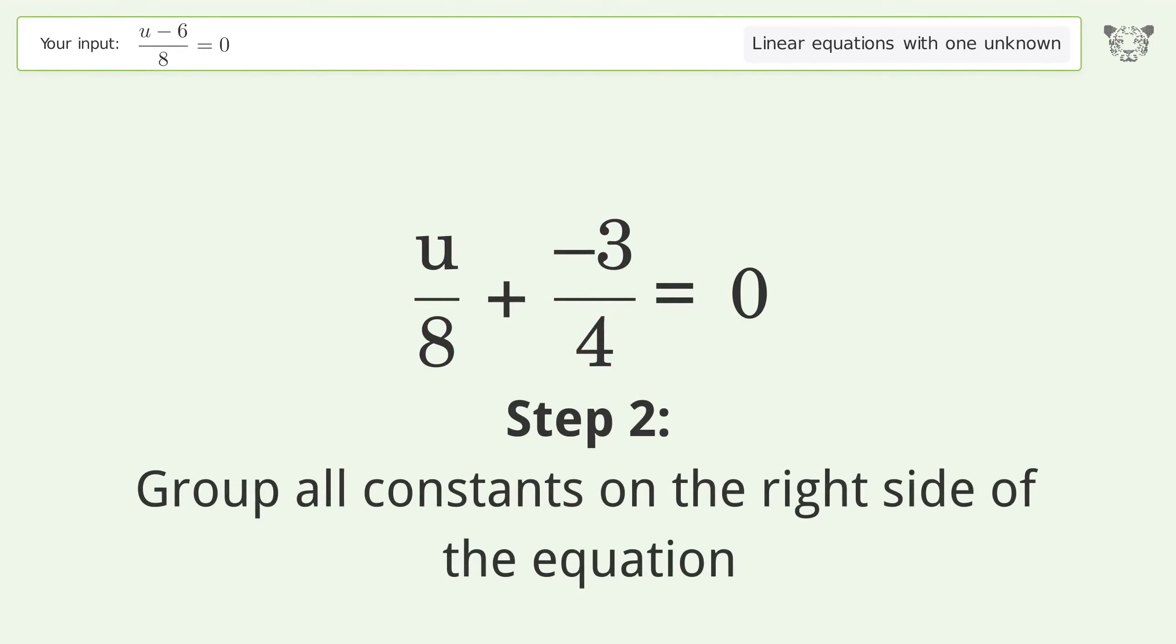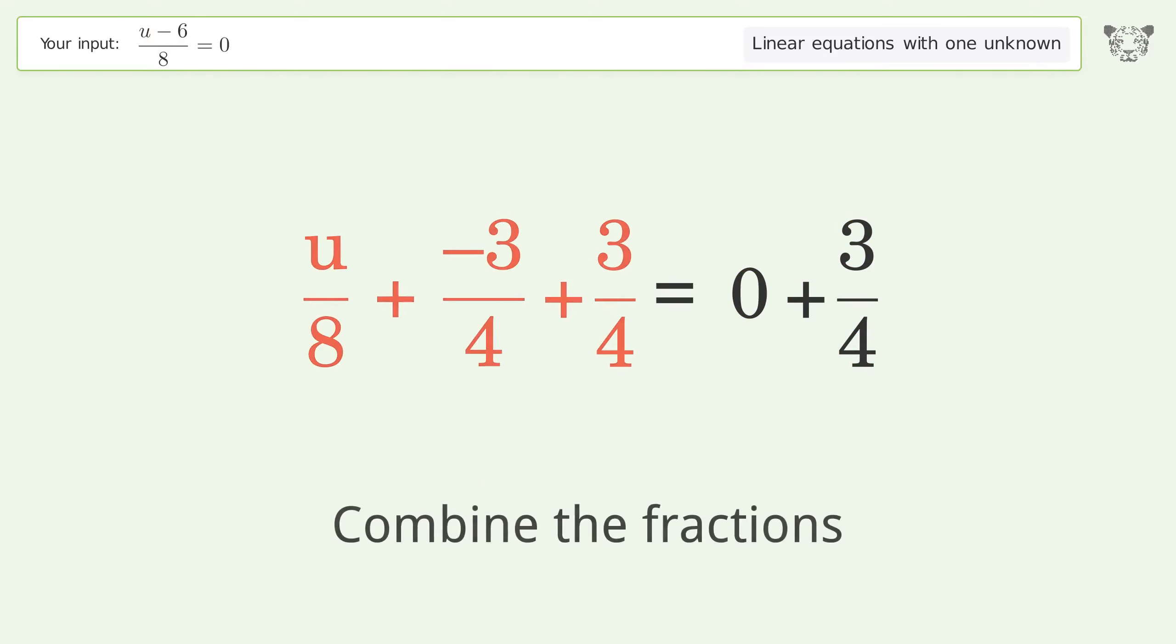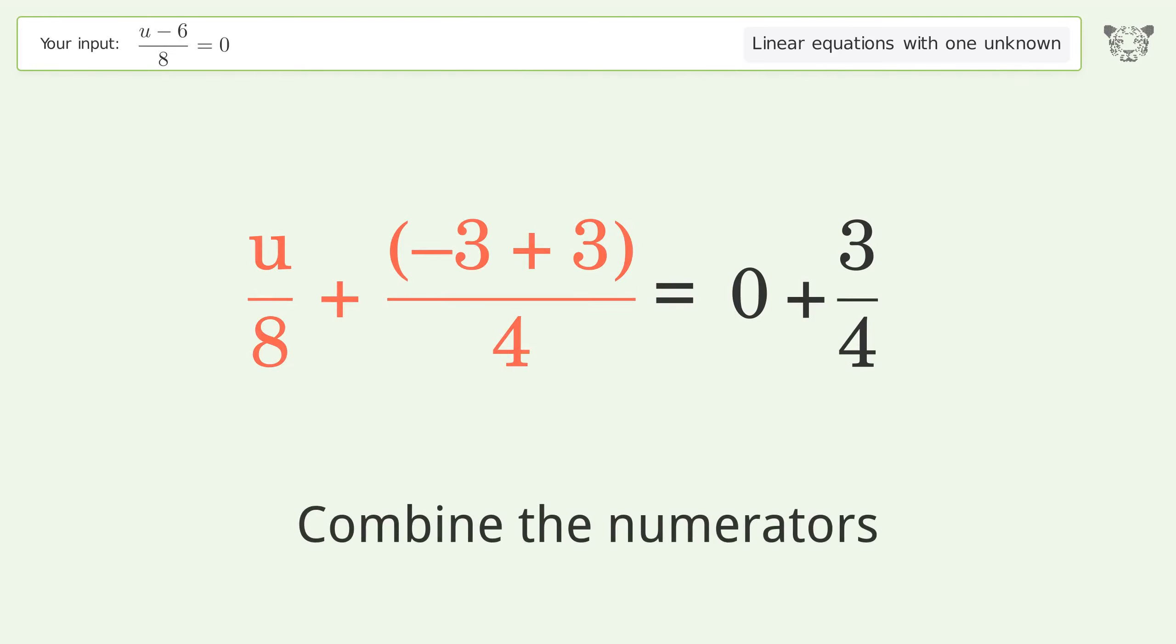Group all constants on the right side of the equation. Add 3 over 4 to both sides. Combine the fractions, then combine the numerators.